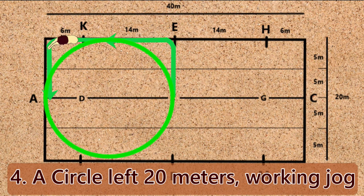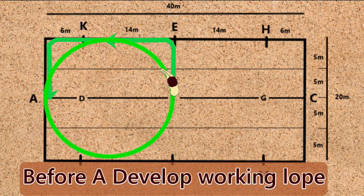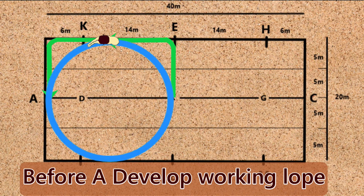Movement 4 continued: A, circle left 20 meters working jog. Before A, develop working lope.